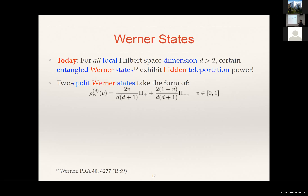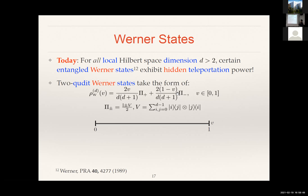For those interested in the details, the Werner states take this form — they are convex mixtures of the projector onto the symmetric subspace and the anti-symmetric subspace, where V is just the swap operator that swaps the two Hilbert spaces. For any dimension d, this is a one-parameter family of states, which I can symbolically represent using a number line. The halfway point is interesting: on one side the Werner states are entangled, and on the other side they are separable.